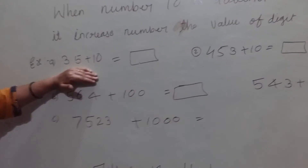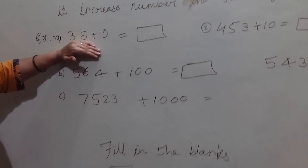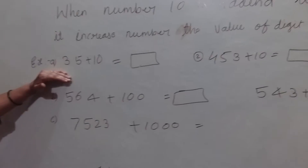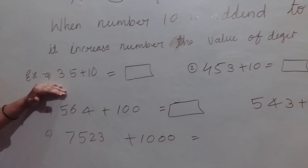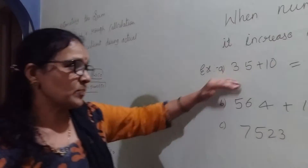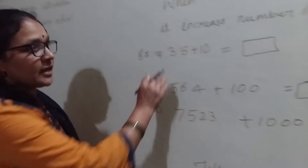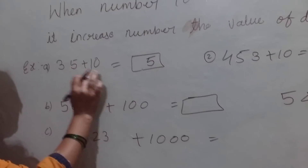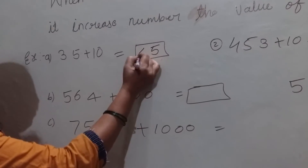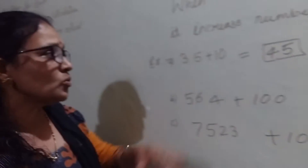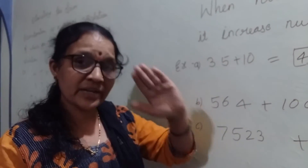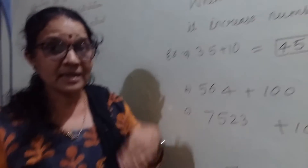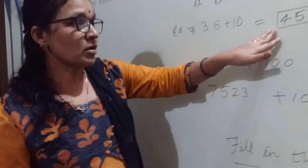35 plus 10. What answer will come? Here you have to change only the tens place. See here — 35 plus 10. The 5 will come as it is. 3 plus 1 is 4. So the answer is 45. You think yourself: skip 10. So, 45.